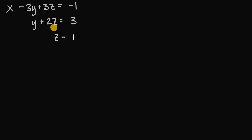The process of back substitution is pretty easy. We start at the bottom of this system of linear equations and we use our known variables to figure out what our other unknown variables are going to be in the other equations. At the very bottom, we have z is equal to one. Since we already know what z is equal to, we can use the value for z, plug it into the equation above us, and solve for y.